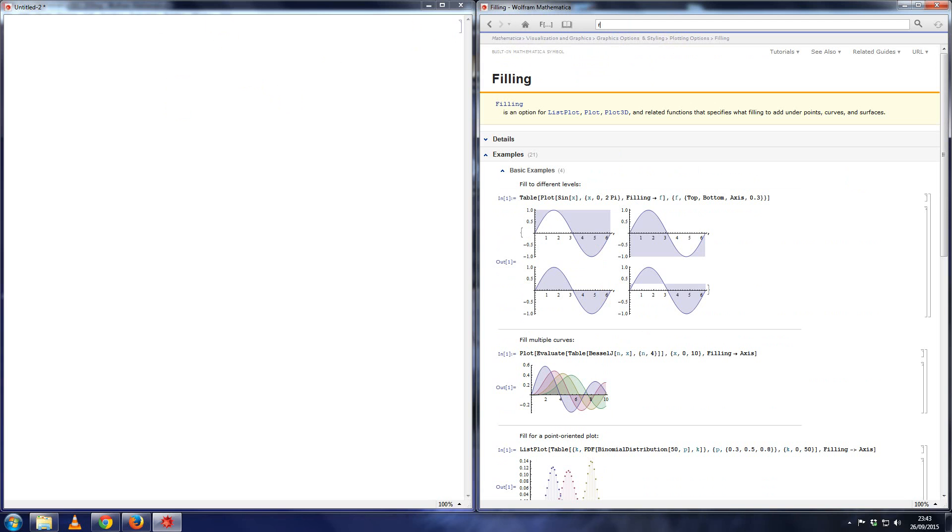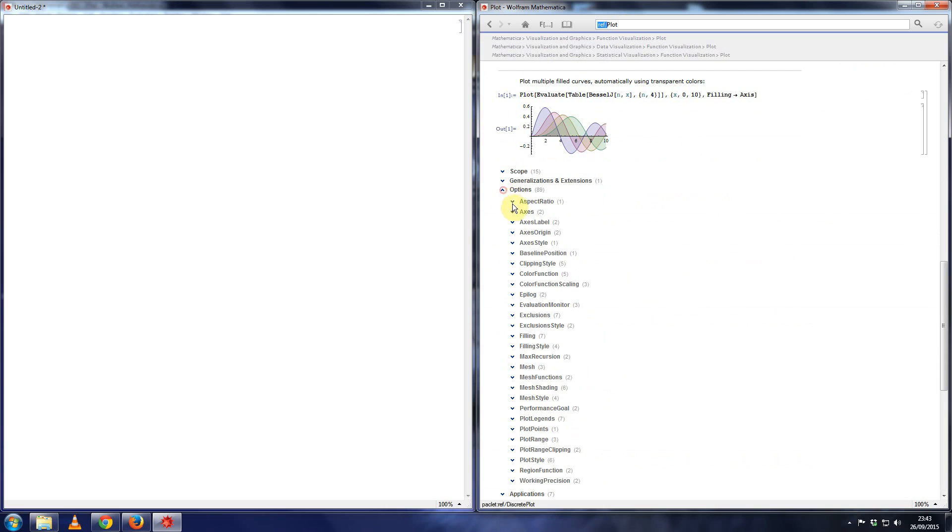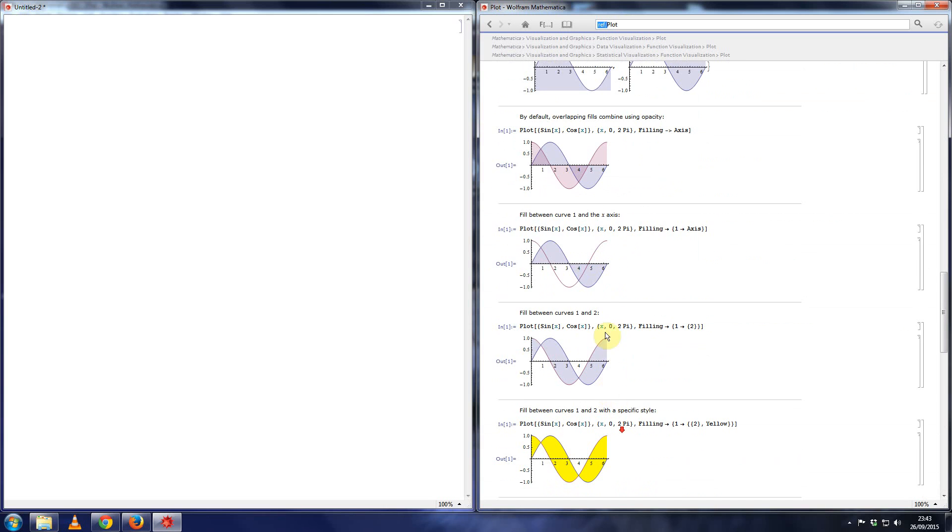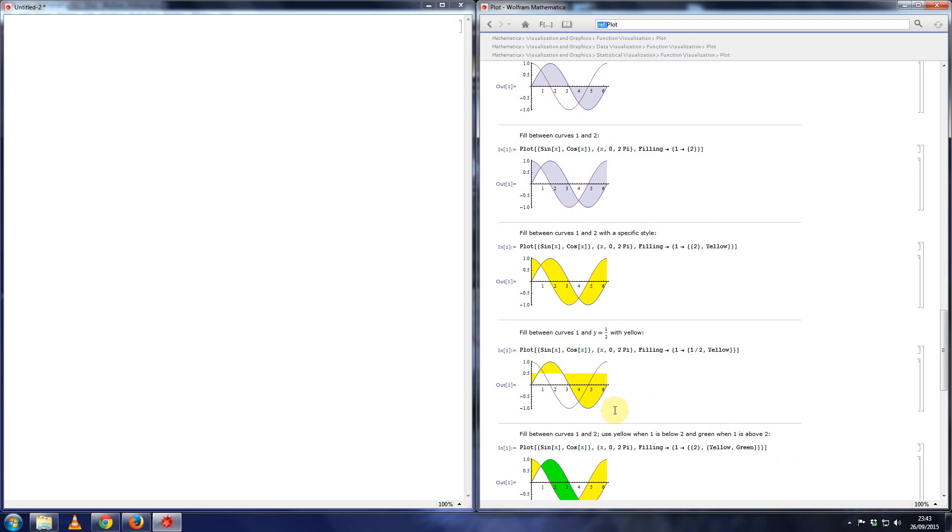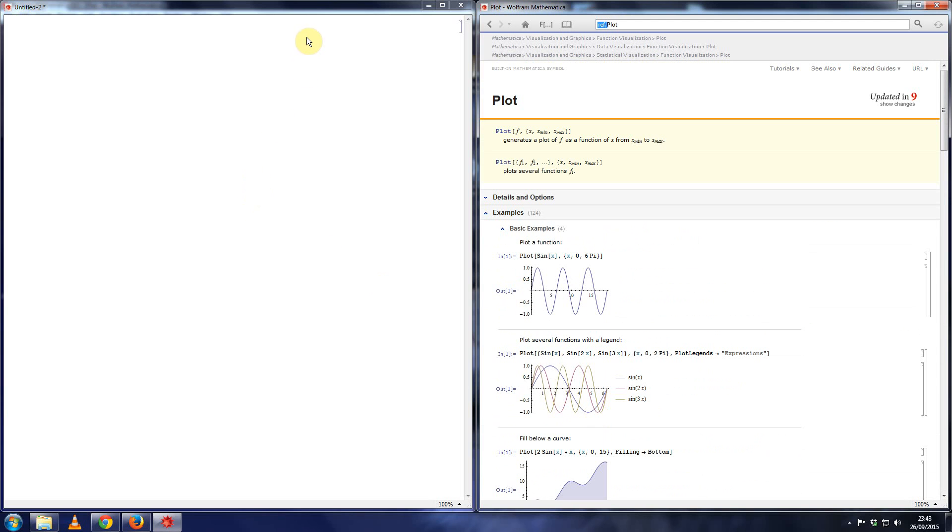Or the other thing you could do is just search for the plot function. And then one of the options under plot is the filling option here. And there's a few examples there as well, you know how to change the color and things like that. So I've made a different video on how to use the plot function to get two or three graphs in one. So if you need to, then watch that video first.